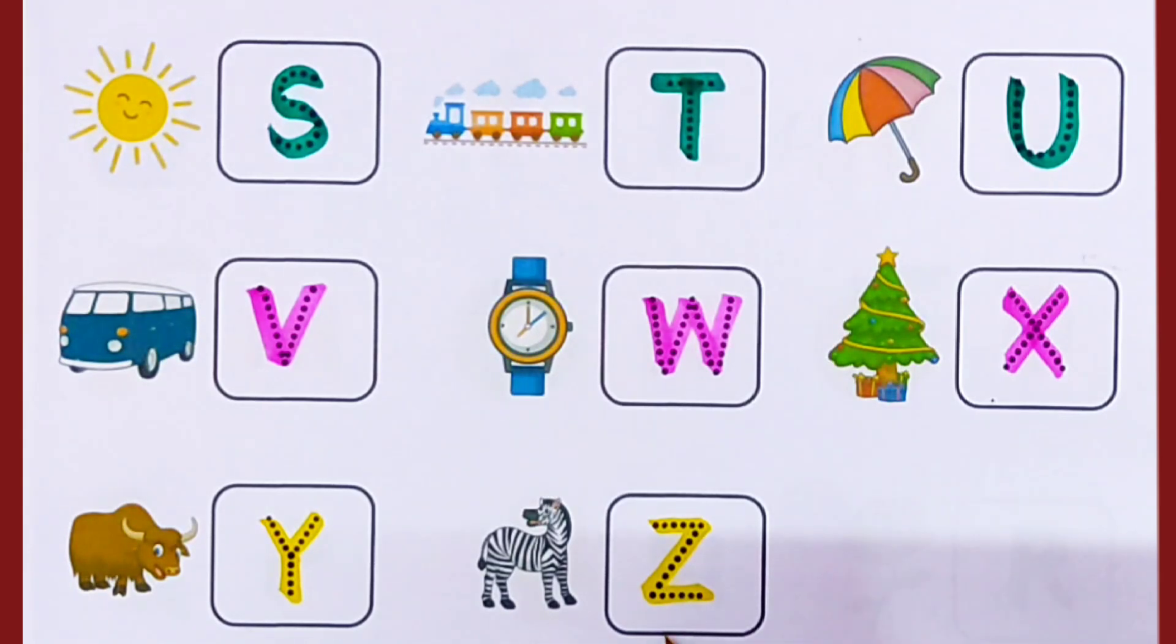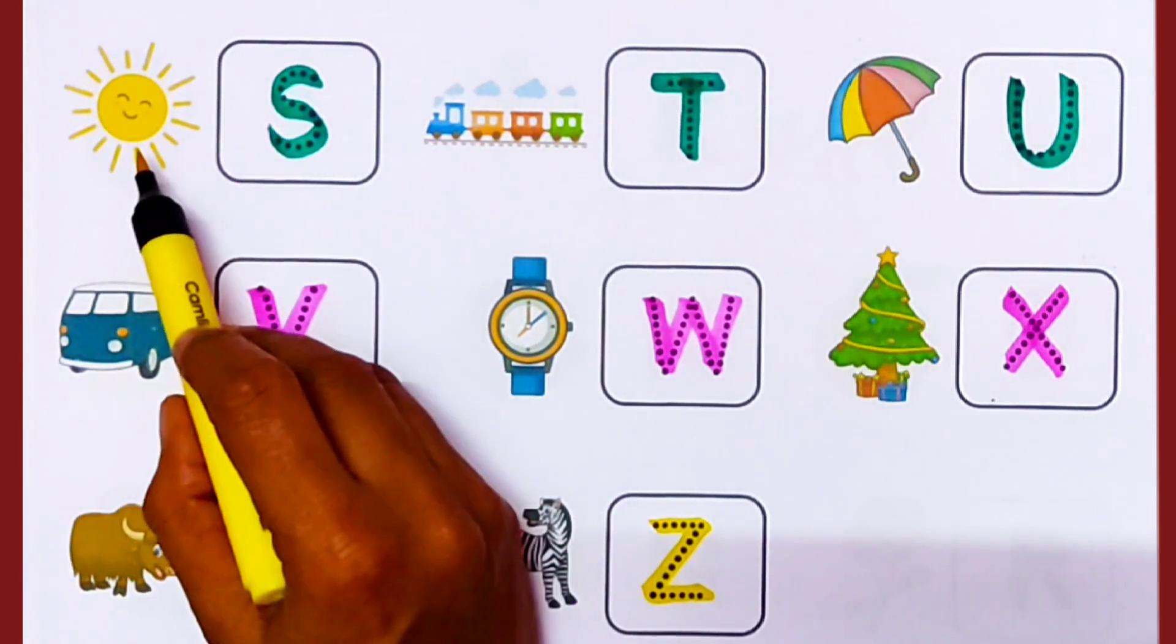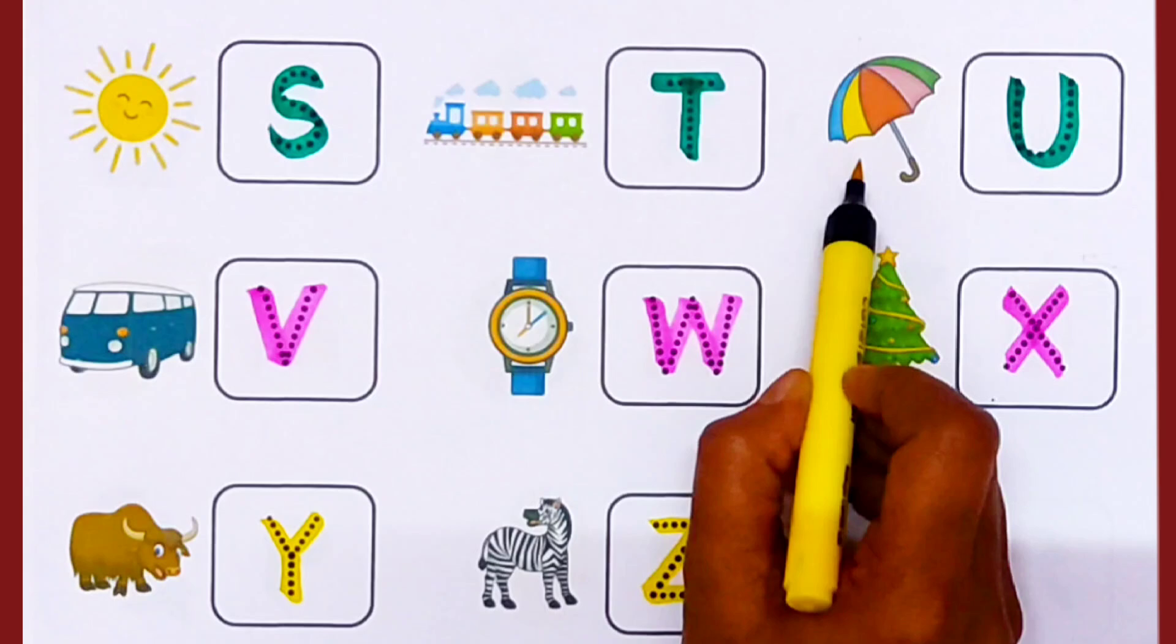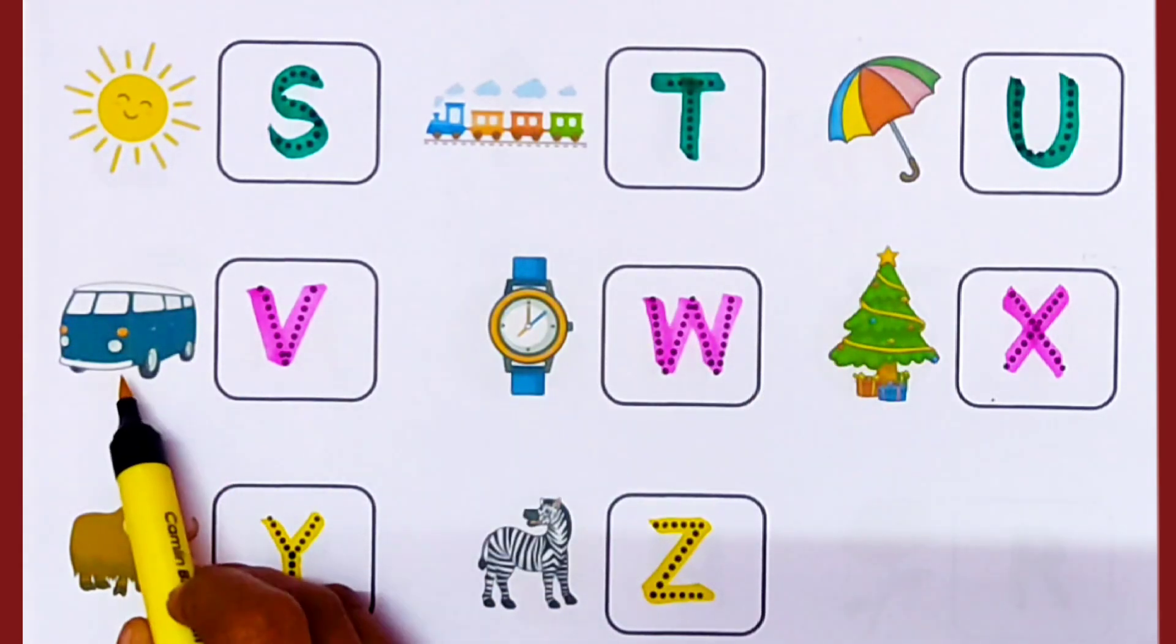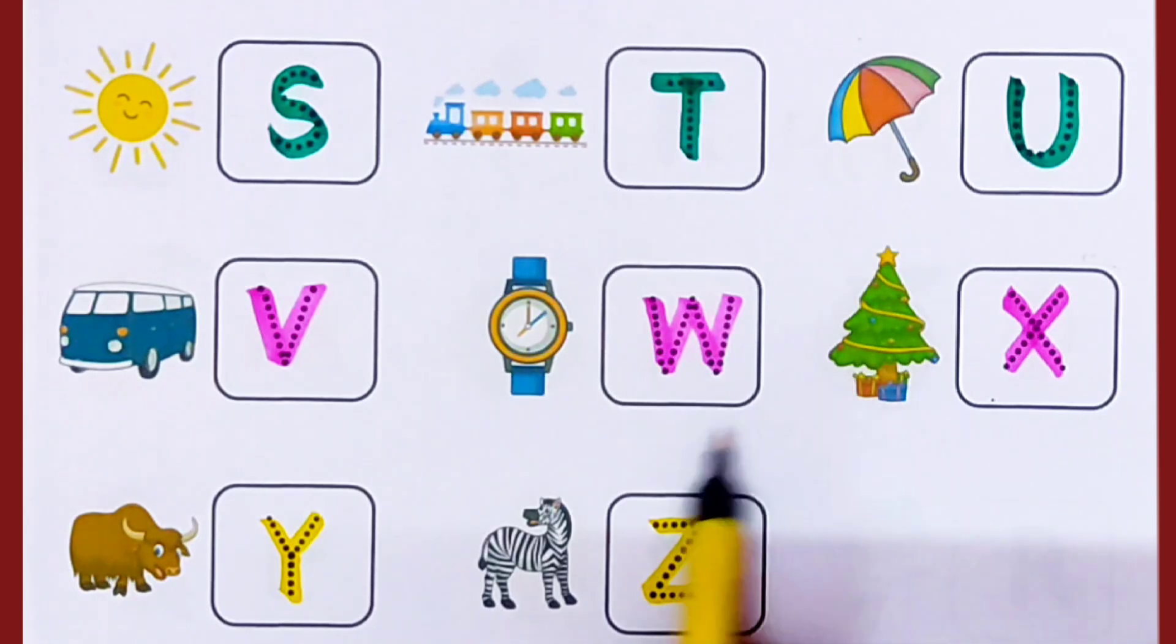Z. Z for Zebra. S for Sun, T for Train, U for Umbrella, V for Van, W for Watch, X for X mystery, Y for Yuck, Z for Zebra.